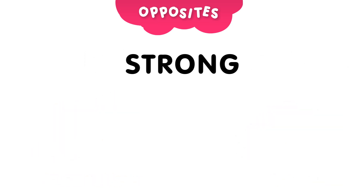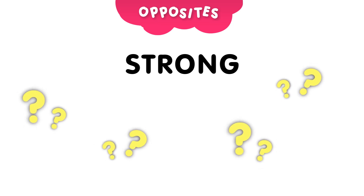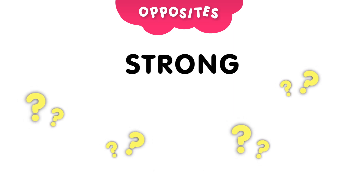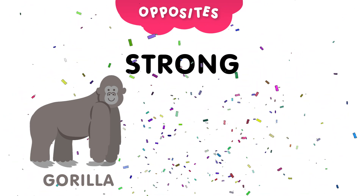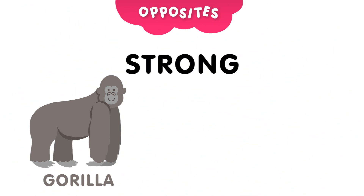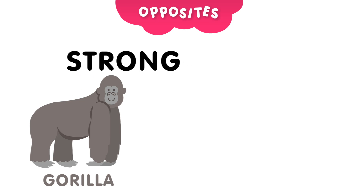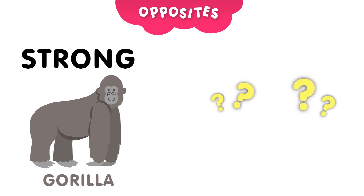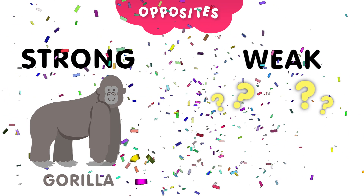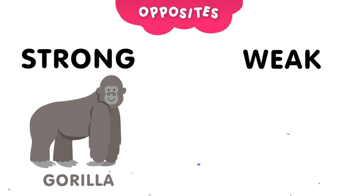Next, we have the word strong. Can you guess which animal is strong? And the answer is, the gorilla. Gorillas are very strong. Now, can you guess the opposite of strong? Take 5 seconds to think about it. And the answer is, the kitten.